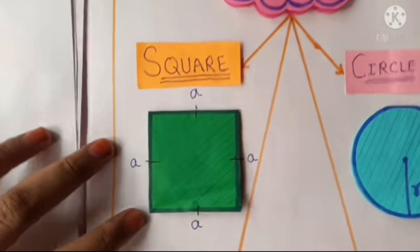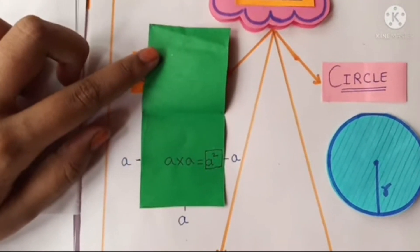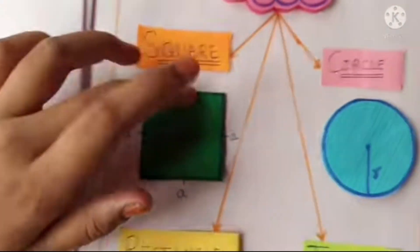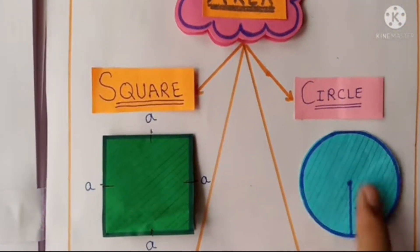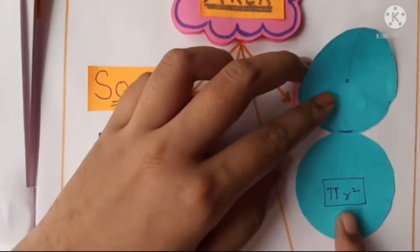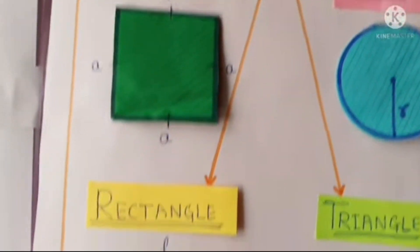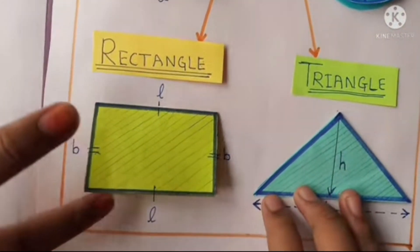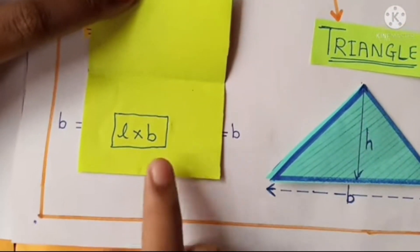Square: area of square — the formula is a × a = a². Area of circle: the formula involves the radius r, giving πr². This is the area of rectangle — let's see its formula: l × b.